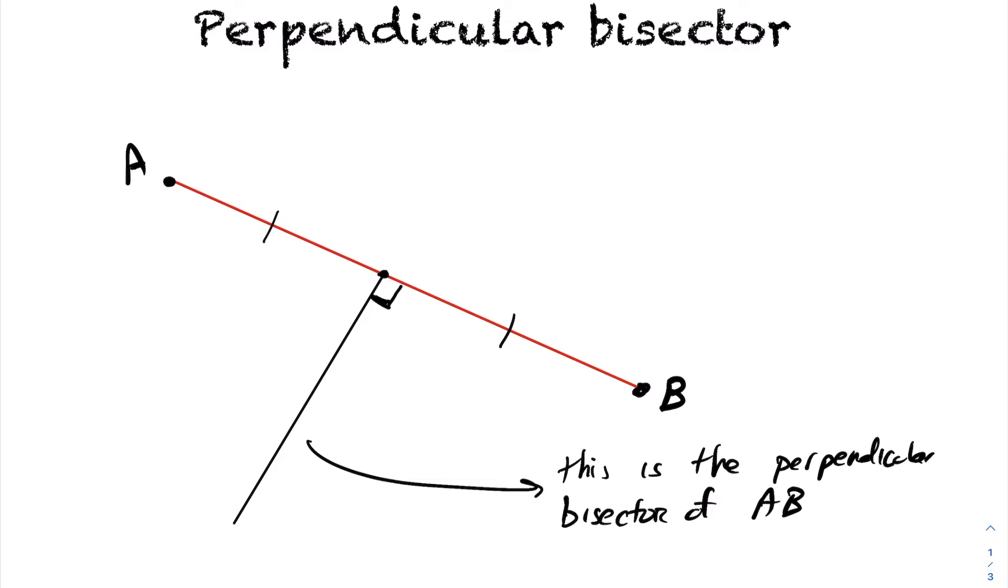Notice it goes through the midpoint, right? This point right here is the midpoint of AB. And it crosses that line segment AB at 90 degrees.